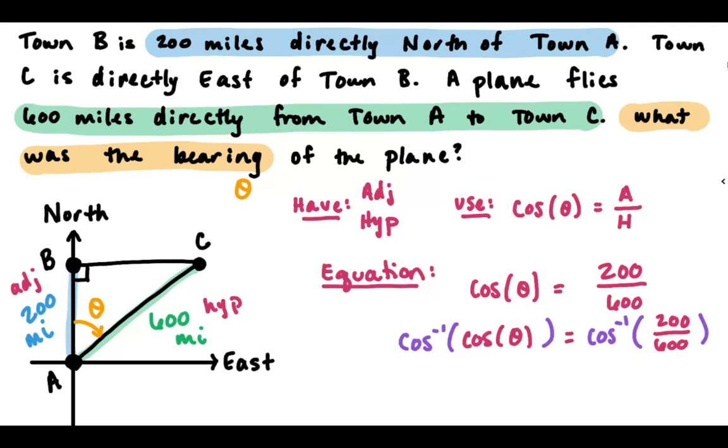So cosine inverse of cosine theta equals cosine inverse of 200 over 600. And this is helpful because cosine inverse and cosine cancel each other out. So on the left side of this equation, all I have remaining is theta. I've got theta by itself. Then this guy, we just need to put into our calculators to figure out what that number is. So remember, we do that by first doing 200 divided by 600. Put that calculator into our fraction. We get 0.3 repeating, so we get that big long decimal. Leave the decimal in there, hit second, and then cosine inverse.